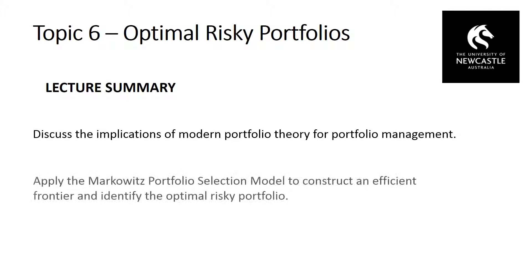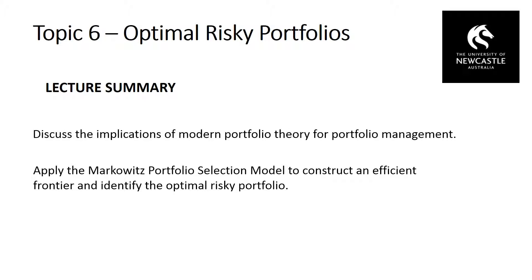Building on this theory, Harry Markowitz, the Nobel laureate, developed a system of portfolio selection whereby we can identify the efficient set of portfolios that will optimise utility for investors. That efficient set is based on the assumption that an investor adopts a mean-variance utility function — that is, they maximise utility by maximising expected return and minimising variance of returns. In that world, an investor will have the highest utility by maximising their Sharpe ratio — the excess expected return divided by the standard deviation of returns — identifying an efficient frontier of optimal risky portfolios with the highest expected return for each given unit of risk.